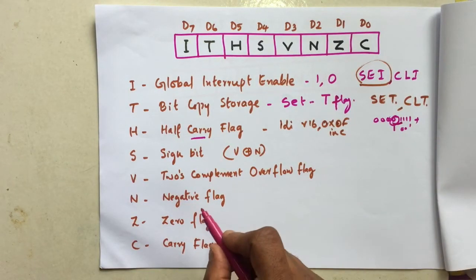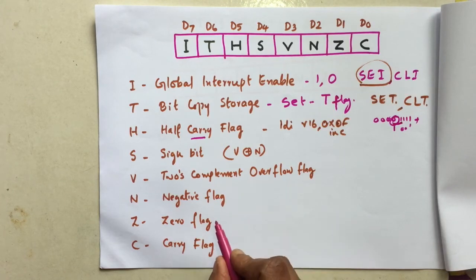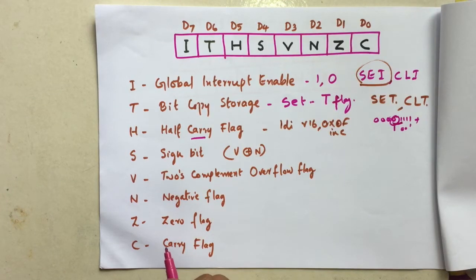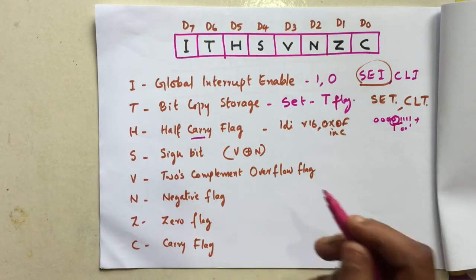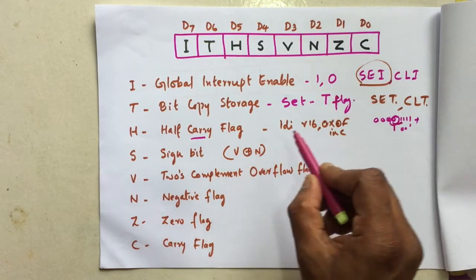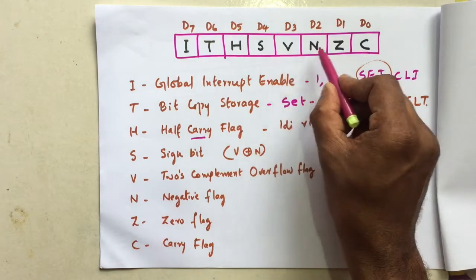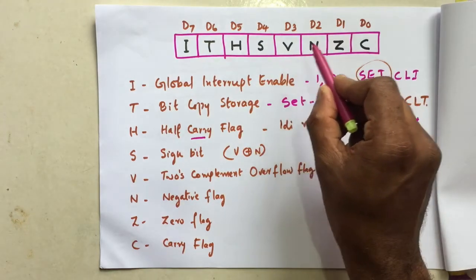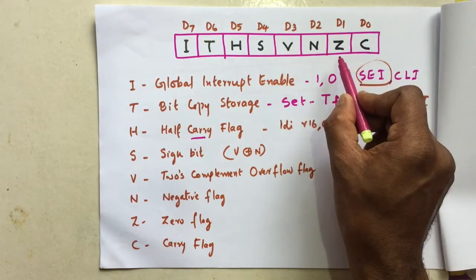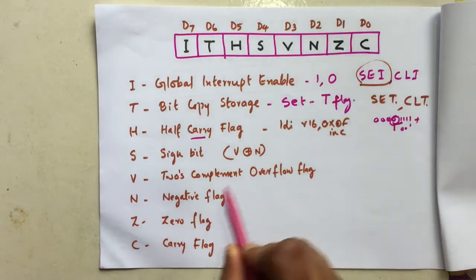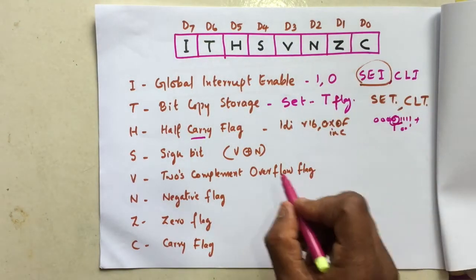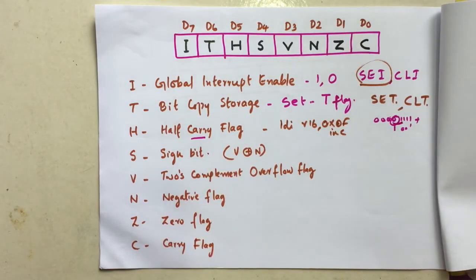Now the sign bit determines if the result of the previous operation is negative or positive. V and N are the two's complement overflow flag and the negative flag, and XOR will give the sign.